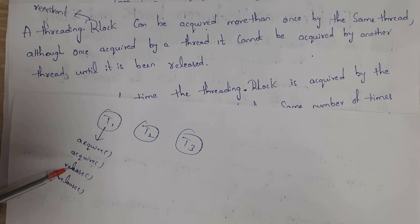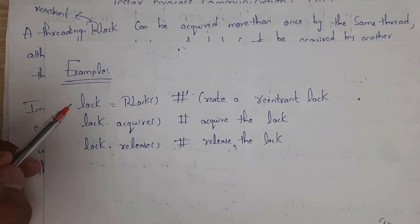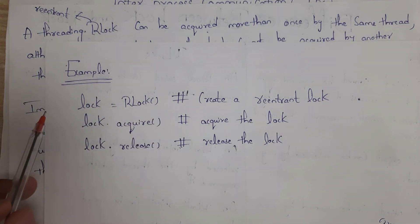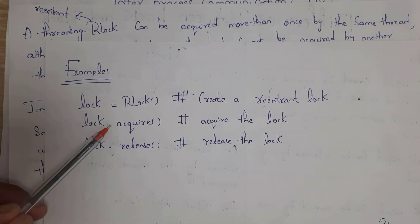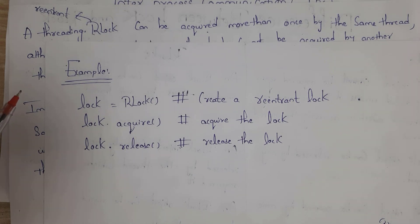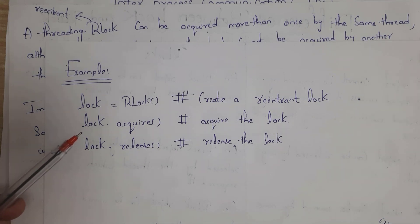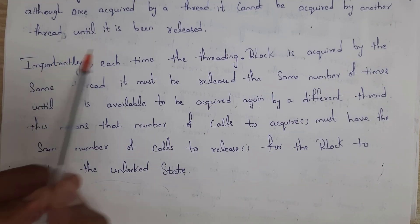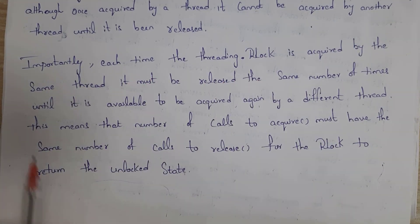If you acquired the lock twice, you need to release it twice. Here is a simple example to create an RLock: take a variable named lock and set it to RLock(). This will create a reentrant lock. To acquire the lock, write lock.acquire(). To release the lock, write lock.release(). Importantly, each time the threading RLock is acquired by the same thread, it must be released the same number of times before it is available to be acquired by a different thread.